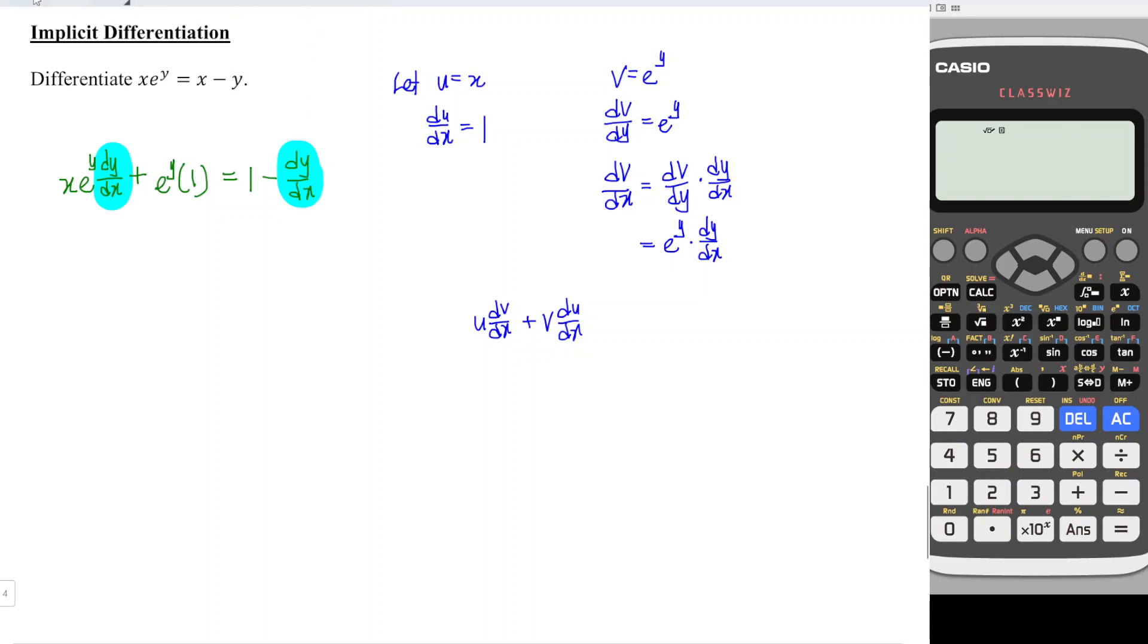Which means that we would have xe^y(dy/dx) minus move over become plus dy/dx is equal to 1 minus, plus move forward become minus e^y times one, we get back e^y.